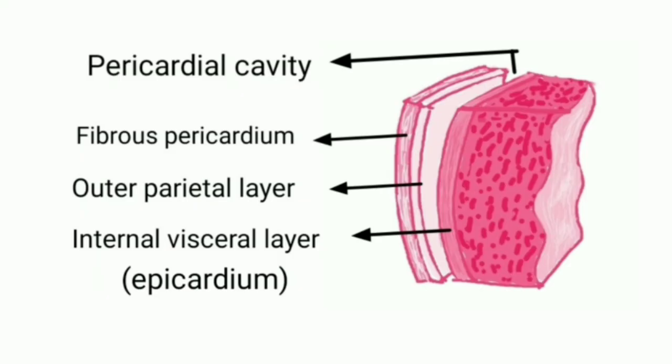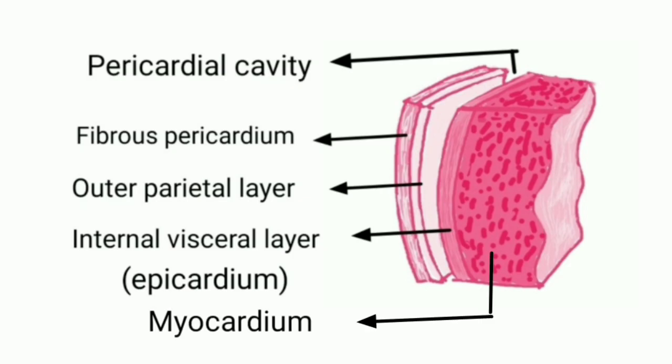Myocardium: the myocardium is the muscle tissue of the heart, composed of cardiac muscle cells called cardiomyocytes that receive nervous stimulation from the SA and AV nodes via Purkinje fibers.